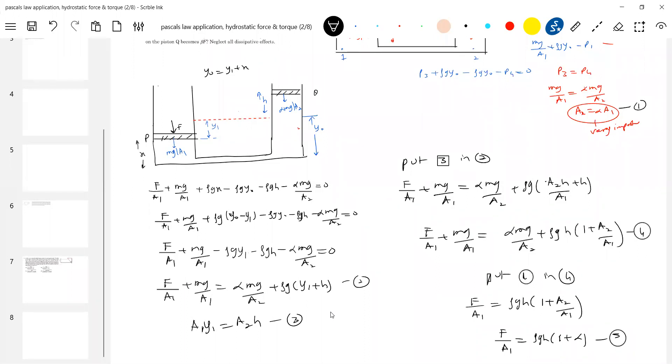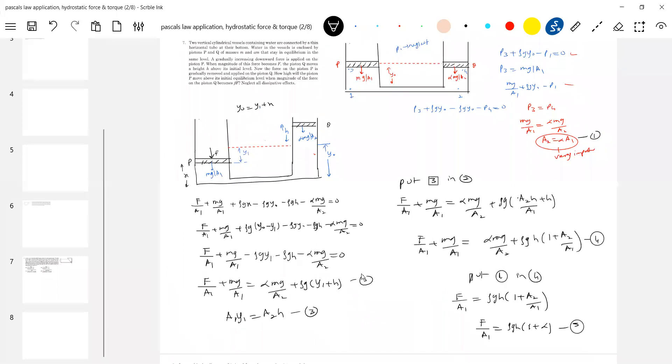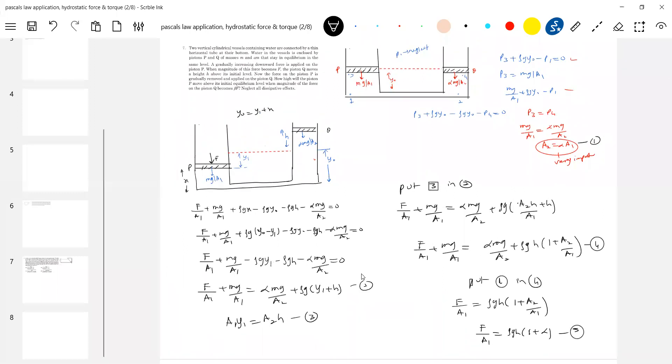Okay, let me take you to the question. Read the next part of the question. Now the force on the piston P is gradually removed and applied on the piston Q. How high will the piston P move above its initial level when the magnitude of the force on the piston Q becomes beta F? Now what force I'll be applying? I'll be applying beta F on the piston Q. And how high the piston P will rise, that has to be determined. So initially for the second, now we'll enter into the last part of the problem.